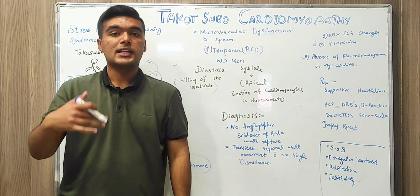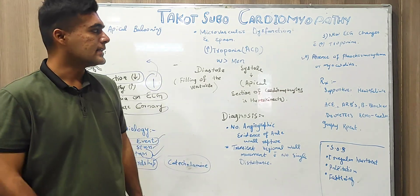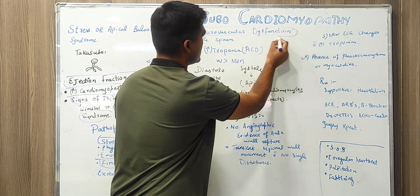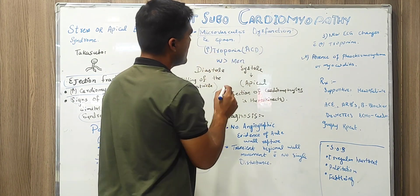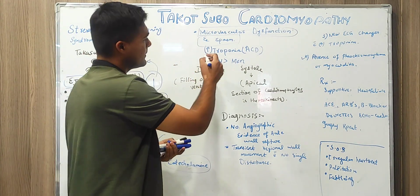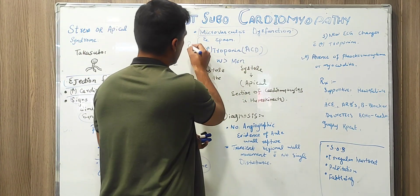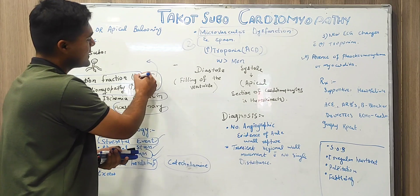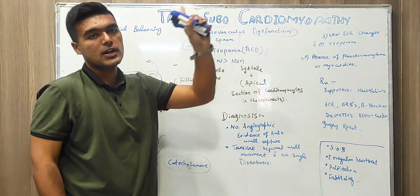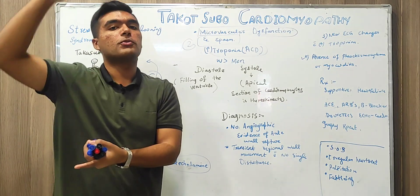Now we have a second important point for diagnosing, for identification. We will see microvascular dysfunction and spasm but with increased troponin level. Second point: first we see ejection fraction, ECG changes, cardiomyocyte damage, then we have microvascular dysfunction as well as troponin level increase.